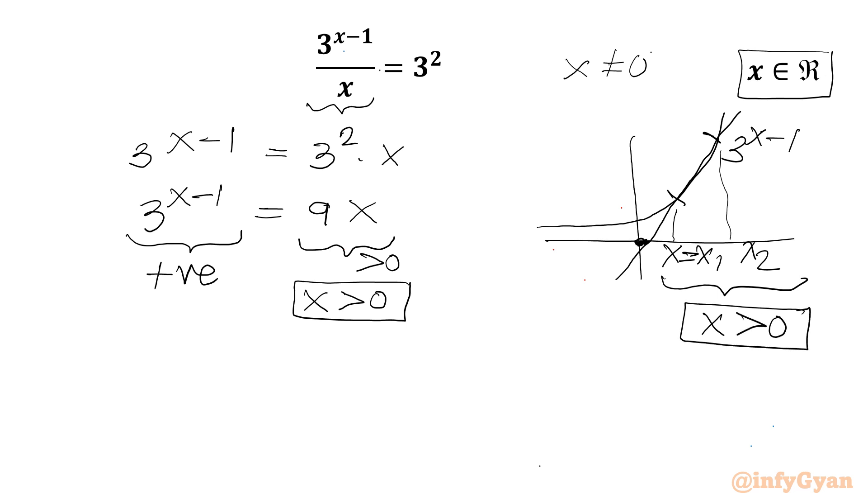Now I will write one exponential property for our left hand side: a to the power of b minus c equals a to the power of b over a to the power of c. So the equation can be written as 3 to the power of x over 3 equals 9 times x. Now I will be dividing both sides by 3 to get 27x equals 3 to the power of x.